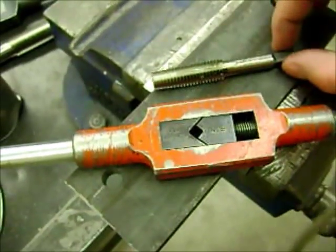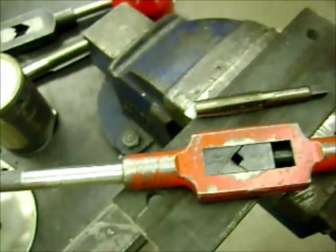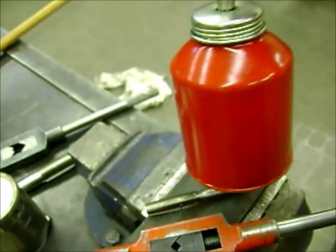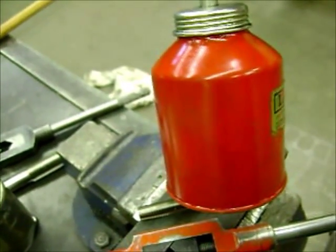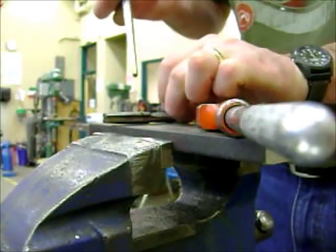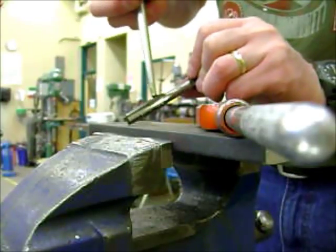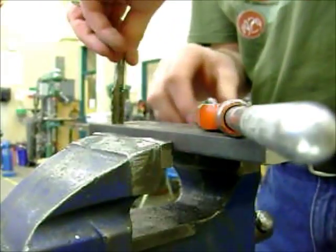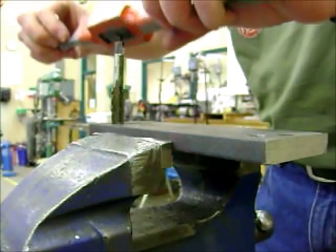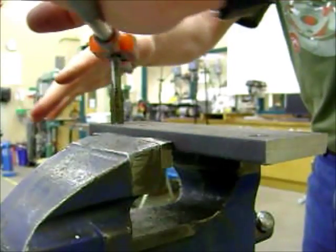So to do this, I've got the tap, I've got a couple holes drilled, I've got a tap handle, and I'm going to use my red can of oil. This is a high sulfur oil called Sulflo. I'm going to put a little bit of oil on the threads, put it in here, put the tap handle on it.